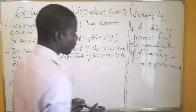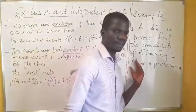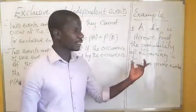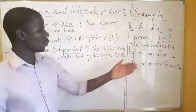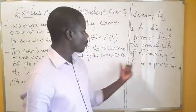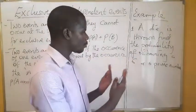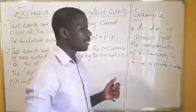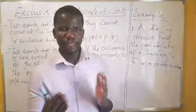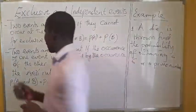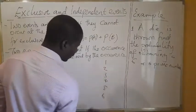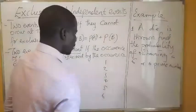We are saying exclusive events give us the OR rule. We are either going to have a six or a prime number. An ordinary die has six sides: one, two, three, four, five, and six. What is the probability of obtaining a six or a prime number when we throw a die?